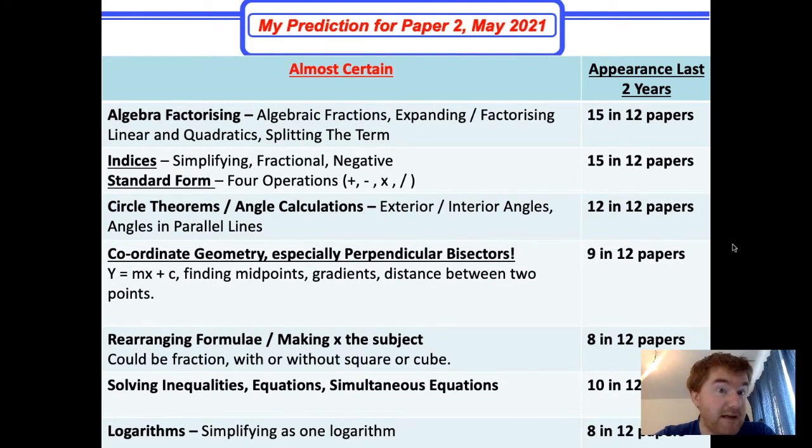Something that surprised me is circle theorems and angle calculations in general, including exterior and interior angles. I was surprised how many circle theorems questions there were on Paper 2 compared to two years ago. I've moved this into my almost certain category. Even if it doesn't appear on Paper 2, it will certainly appear in Paper 4. You must know cyclic quadrilaterals, alternate segment theorem, and intersecting chord theorem.